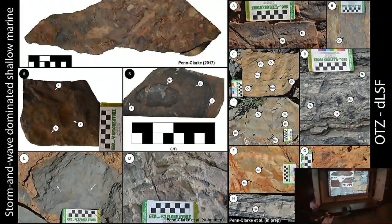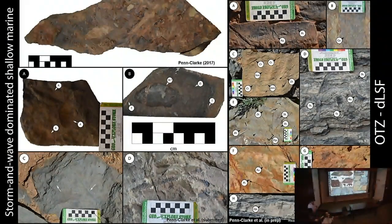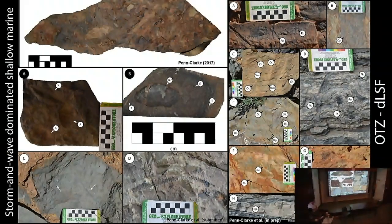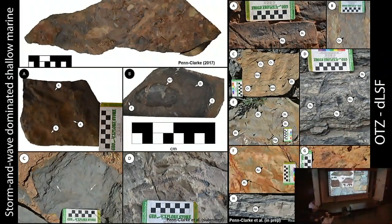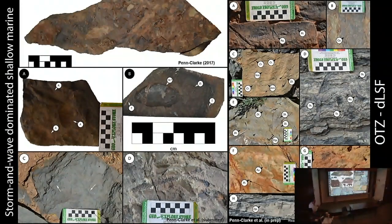In terms of fossils in the offshore transition zone, you get shell beds with highly damaged and disarticulated fossils in very turbulent storm-generated environments. We find allochthonous plant fossils — plant material that was blown into the basin. Trace fossils indicate Cruziana-type ichnofacies, but that deserves its own talk.